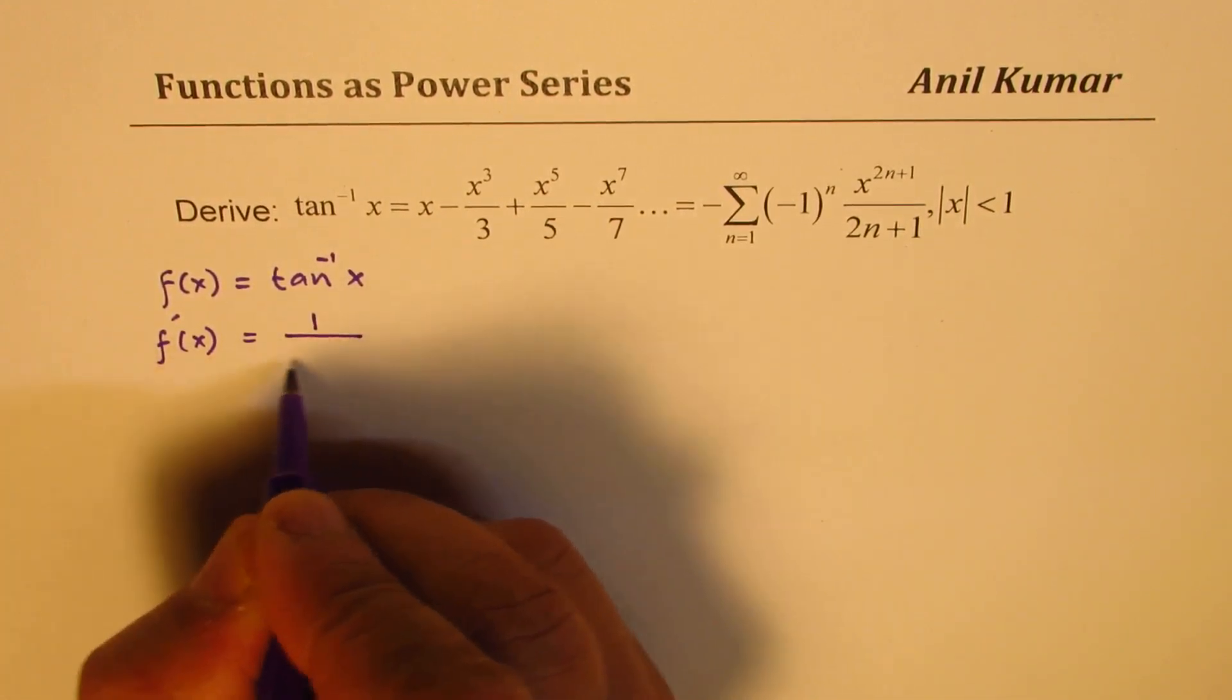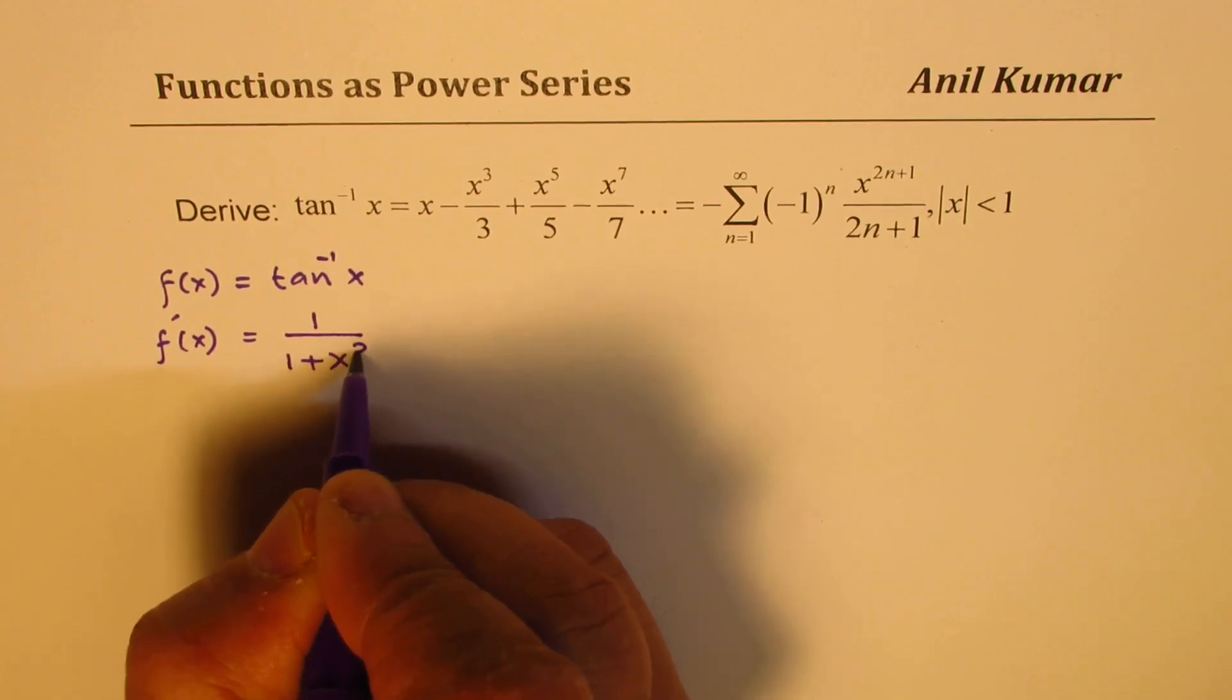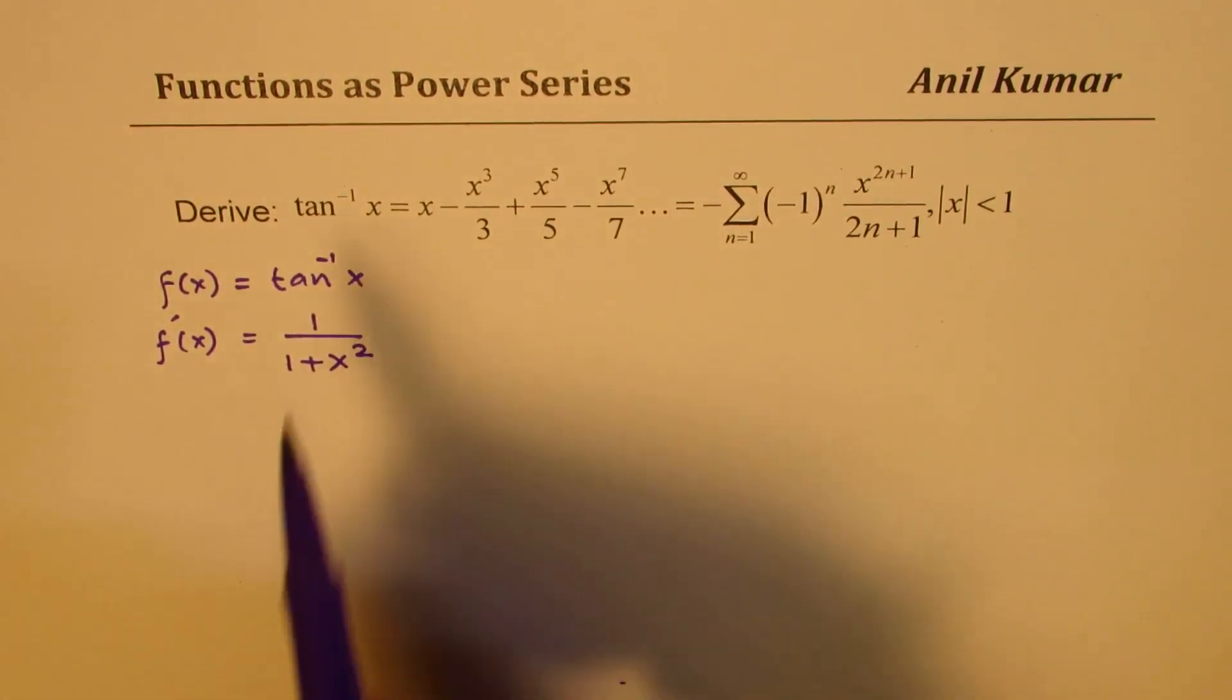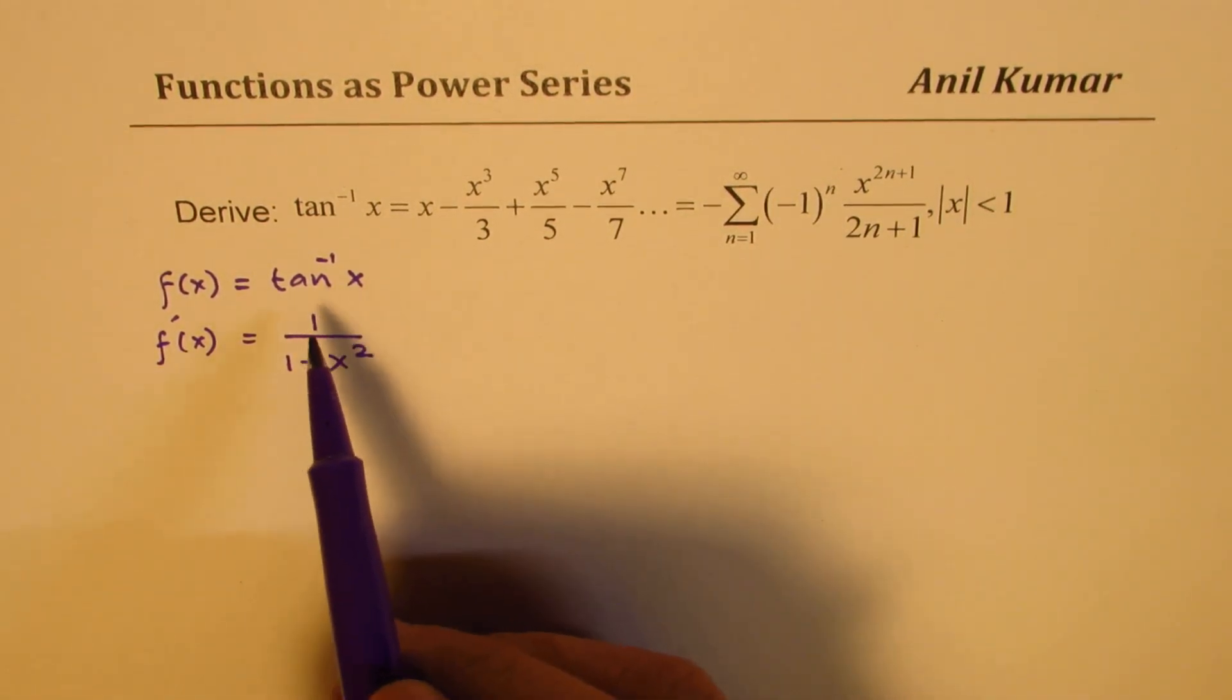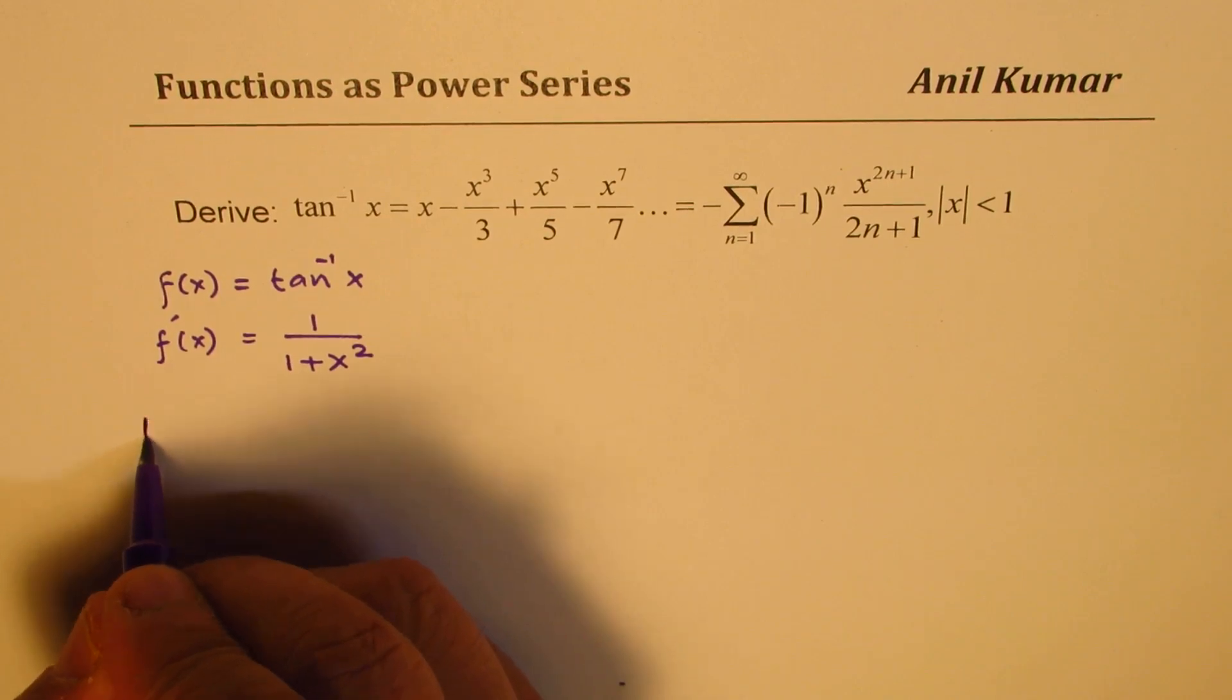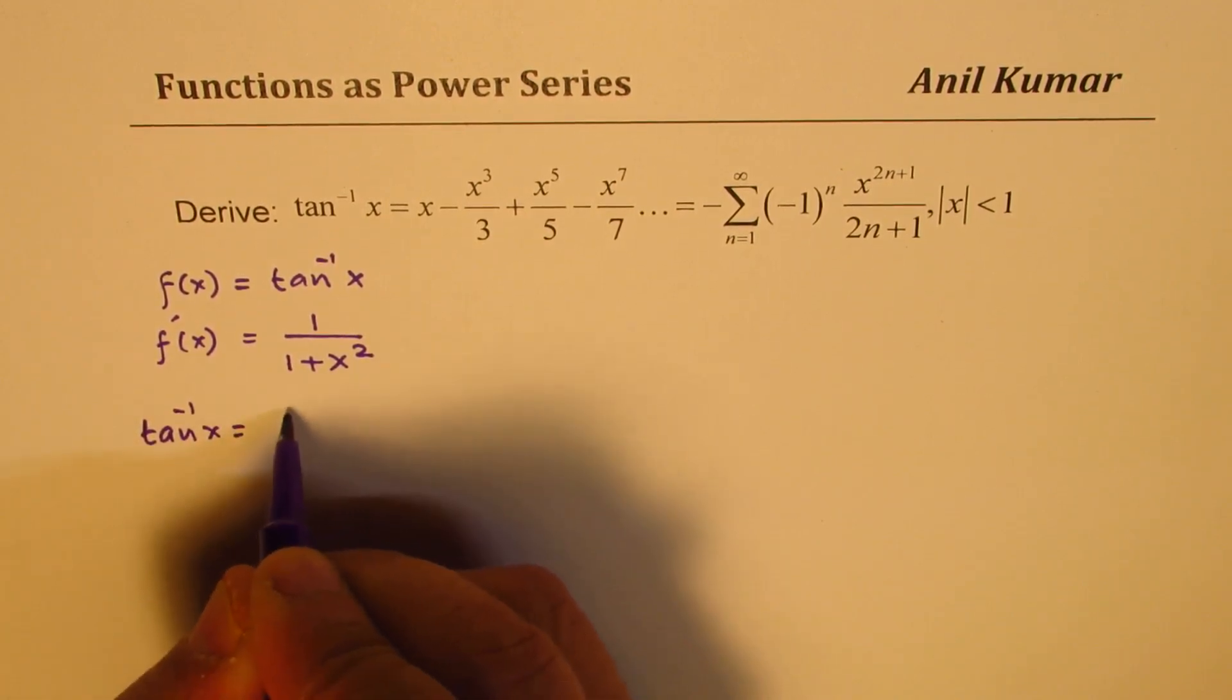So that is the derivative. Now since that is the derivative, I could always write tan inverse x as the integral of this. That means tan inverse x is equal to integral of one over one plus x squared dx.